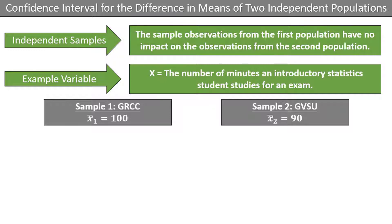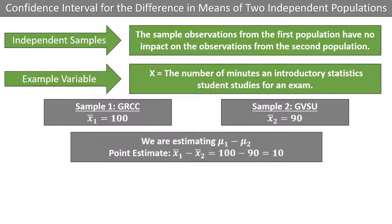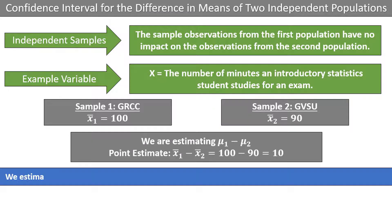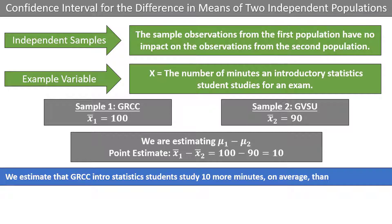The quantity we are trying to estimate is the difference of two population means, mu1 minus mu2, and the point estimate is the difference of the two sample means, x-bar1 minus x-bar2, which is 100 minus 90 and equals 10. The interpretation of the point estimate is that we estimate that GRCC intro statistics students study 10 more minutes on average than GVSU students.